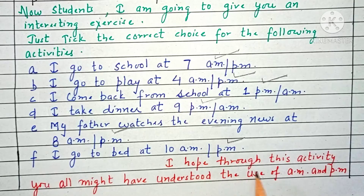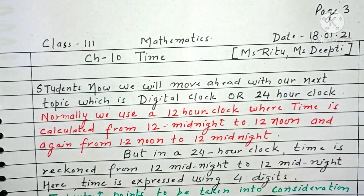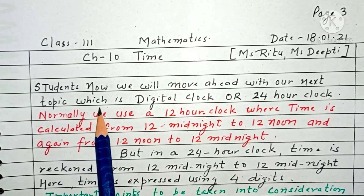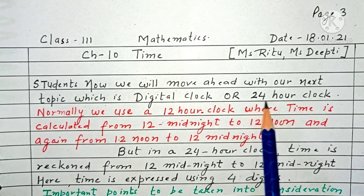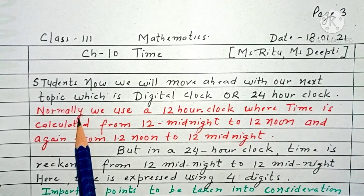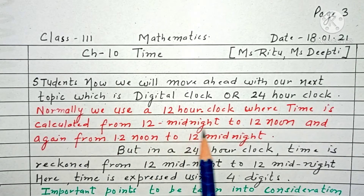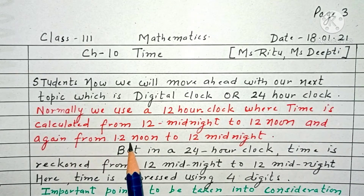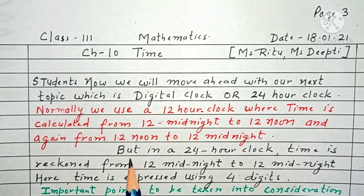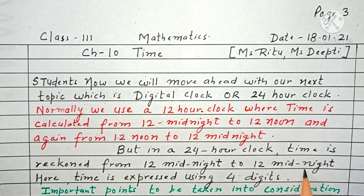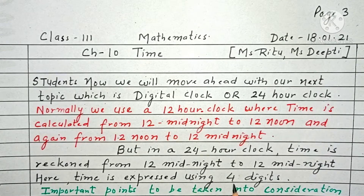I hope through this activity you all might have understood the use of AM and PM. Now we will move ahead with our next topic, which is the digital clock or 24-hour clock. Normally we use a 12-hour clock where time is calculated from 12 midnight to 12 noon and again from 12 noon to 12 midnight. In the 24-hour clock, time is expressed using 4 digits.